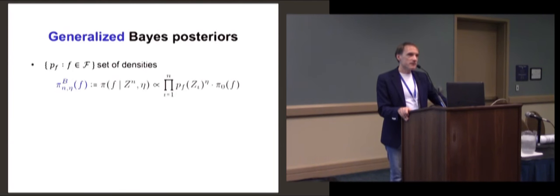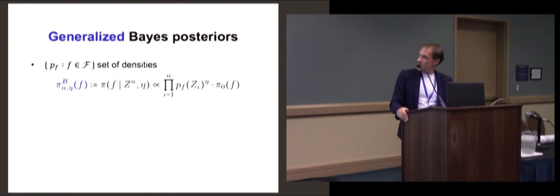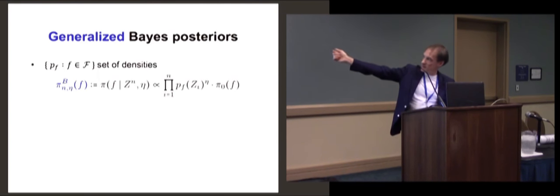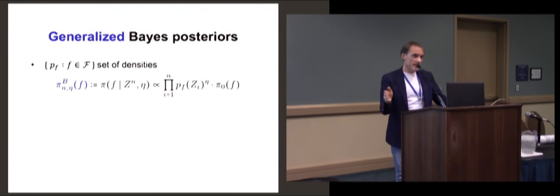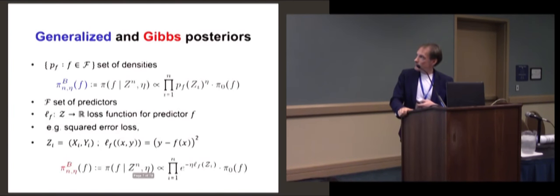What do I mean by generalized Bayes? We have a set of densities. If eta is 1, it's just a standard Bayesian posterior — think of F as the name for your probability density, pi_0 is a prior. I only look at IID models, so P_F is the density of an outcome Z, and the posterior is proportional to the prior times the likelihood. But in generalized Bayes, eta is not necessarily equal to 1 — mainly smaller than 1. If you take eta smaller than 1, you get a generalized updating procedure which puts more weight on the prior and less on the data. With eta equal to 0, the posterior is just the prior. I'm also looking at Gibbs posteriors, which are a further generalization.